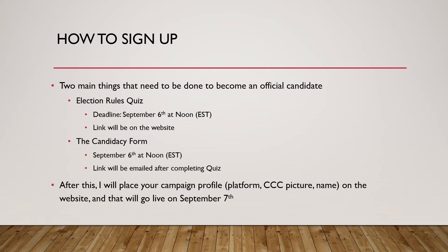Now let's talk about how to sign up. There are two main things you need to do before you become a candidate. The first is to go on the student association website and find the link to the election rules quiz. You'll be given a 10-question quiz about campaign procedures, and you need to get all 10 questions right with 100% accuracy. The questions are straightforward, and all answers can be found on the student association's website.